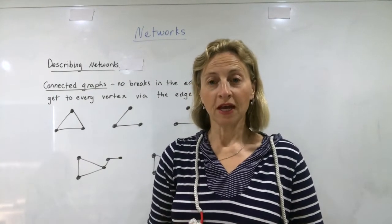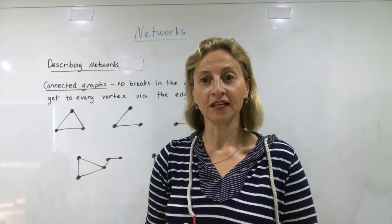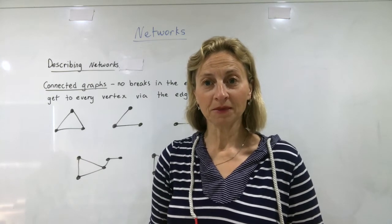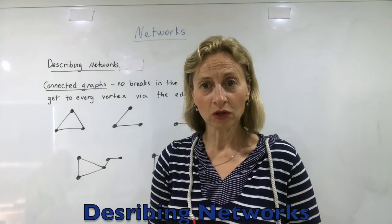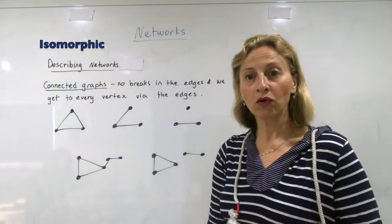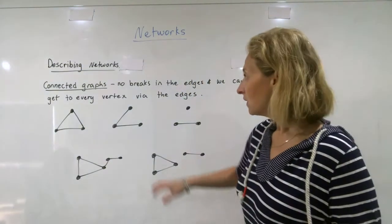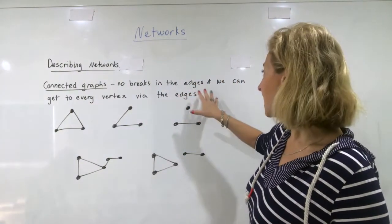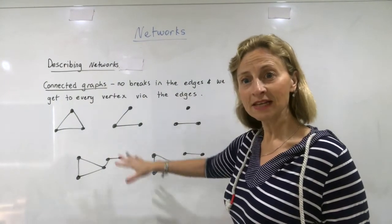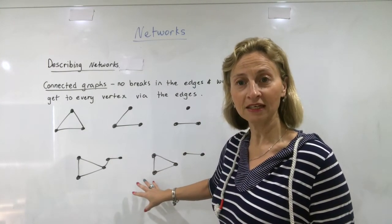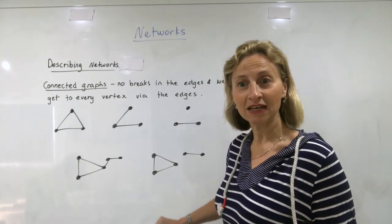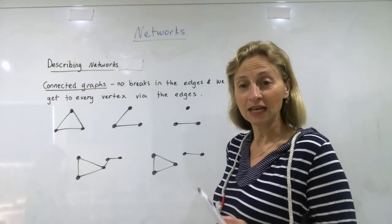All networks will look different, and depending on how many edges and vertices are connected, you can describe or name the network differently. Let's go through the different types. You can have connected networks or non-connected networks, or you can have isomorphic networks. Connected graphs have no breaks in the edges, and you can connect every vertex through the edges. Remember: if all the dots are connected by edges, it's connected. If not, it's non-connected.